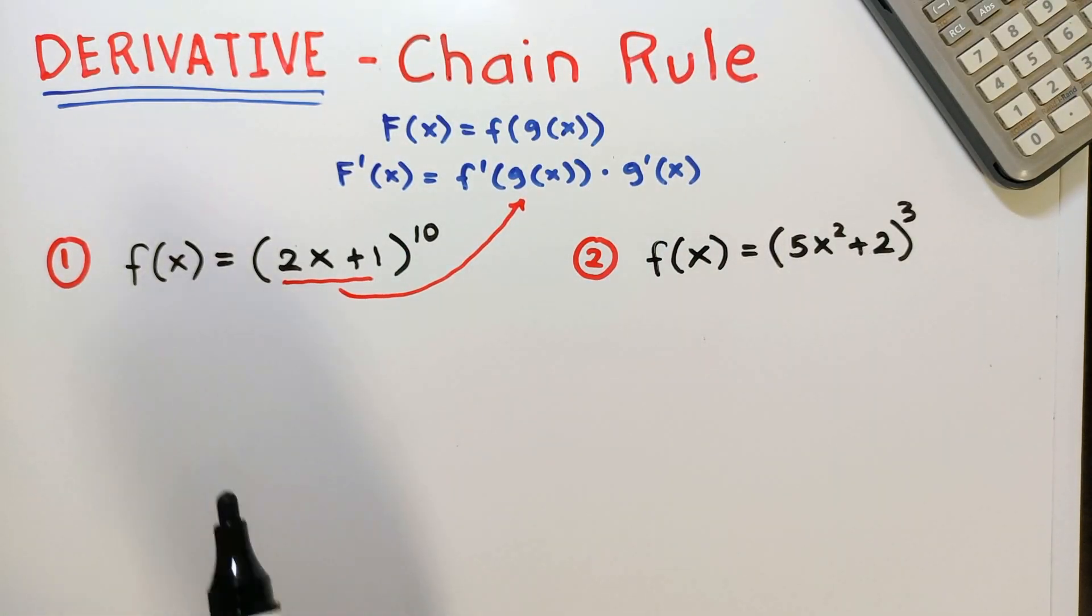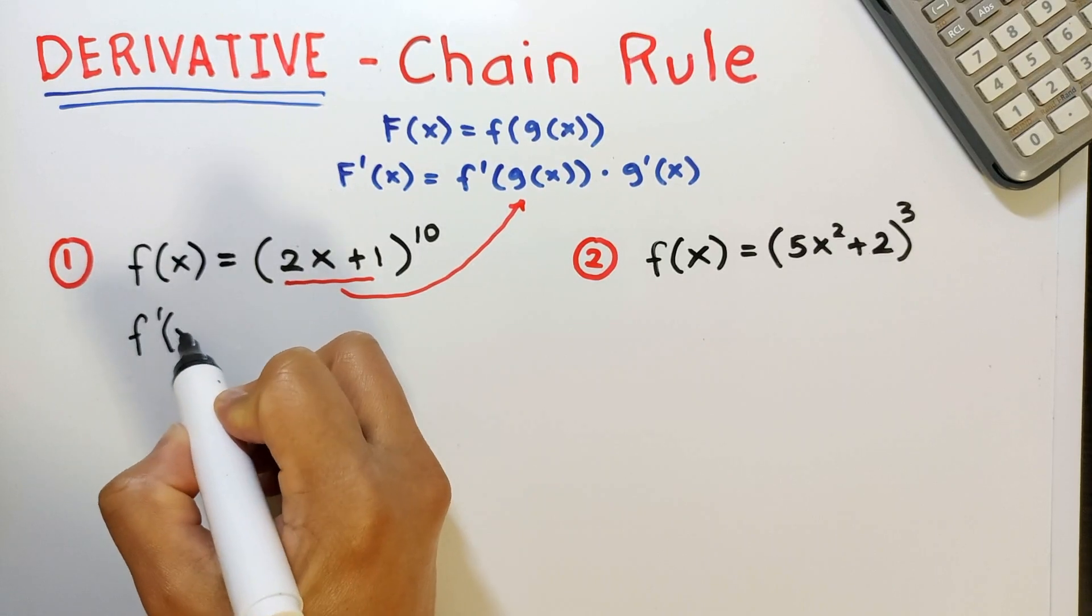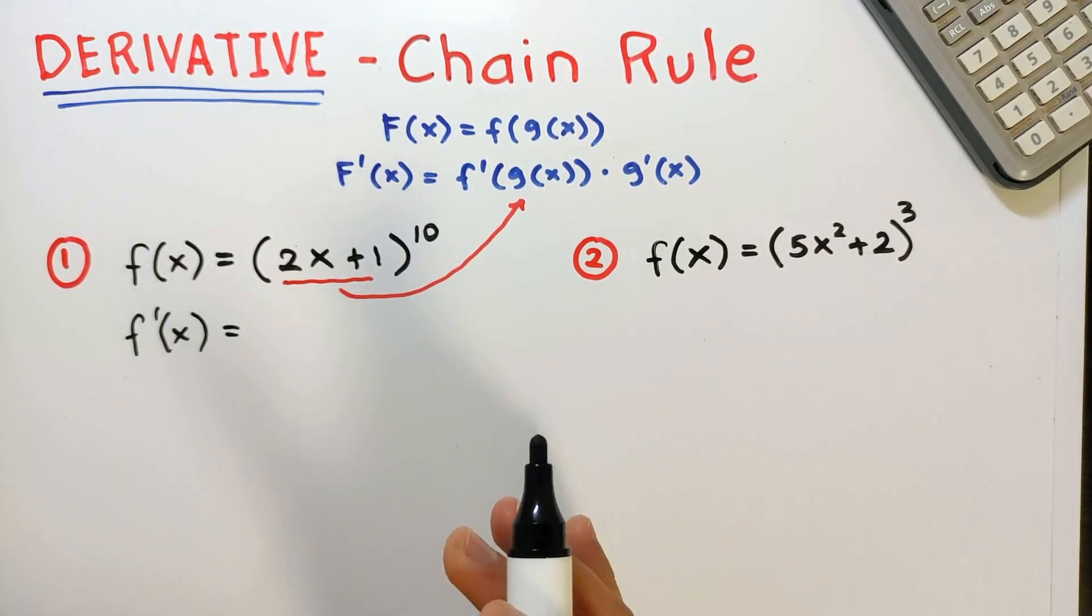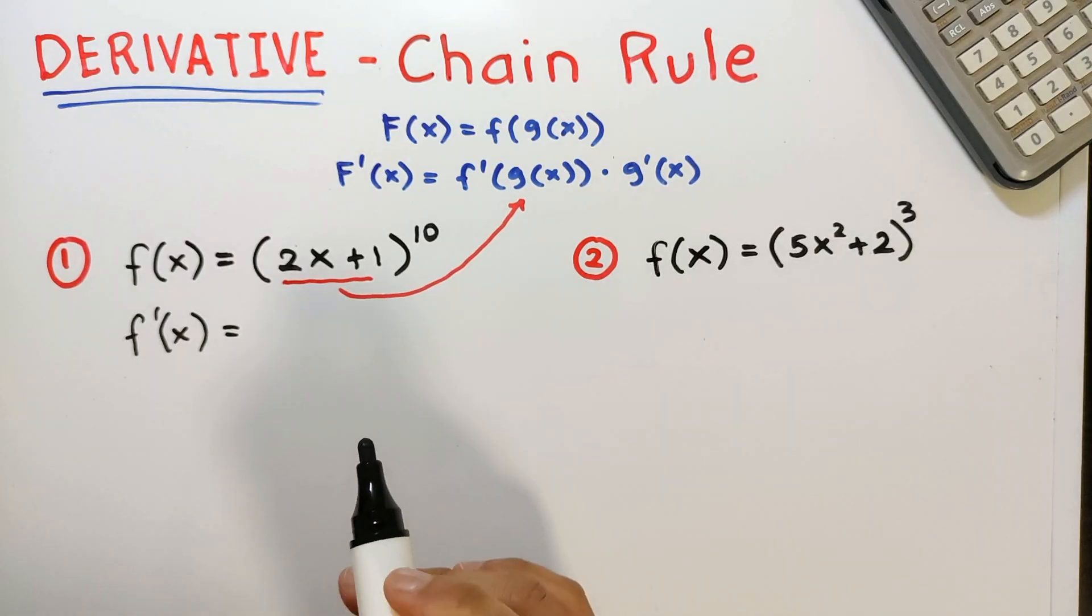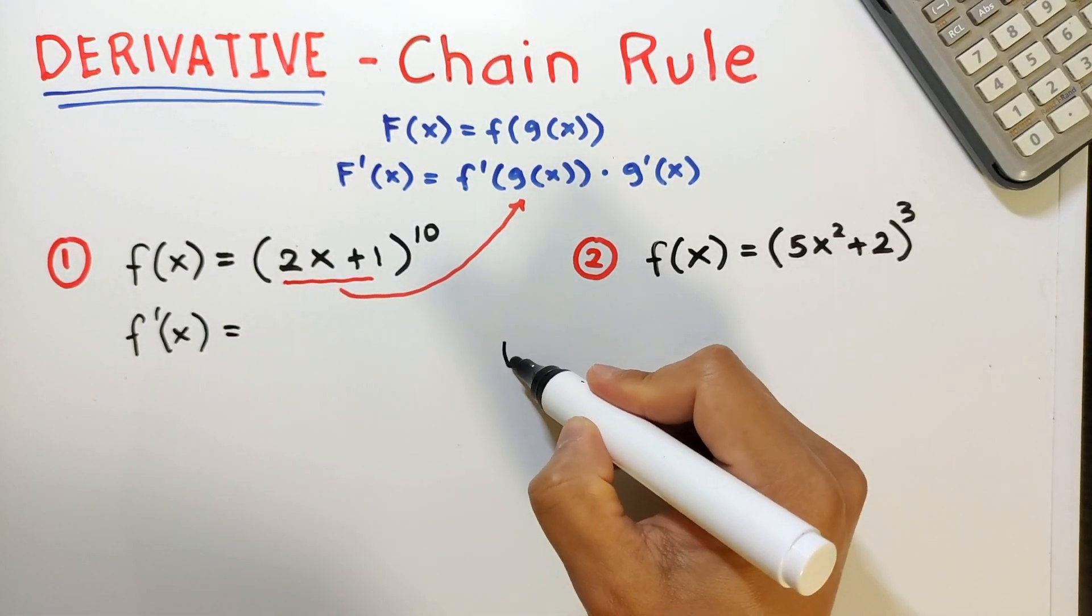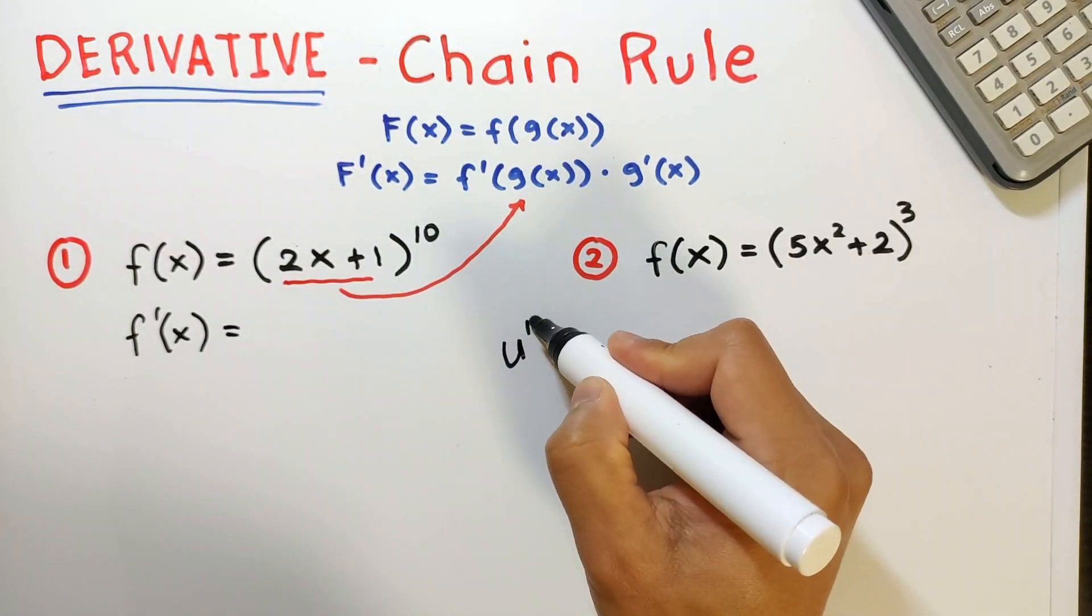Which means to find the derivative, we will assume that this inner function is just a single variable. Now if this is a single variable, let's say u, then this is equal to u raised to 10.